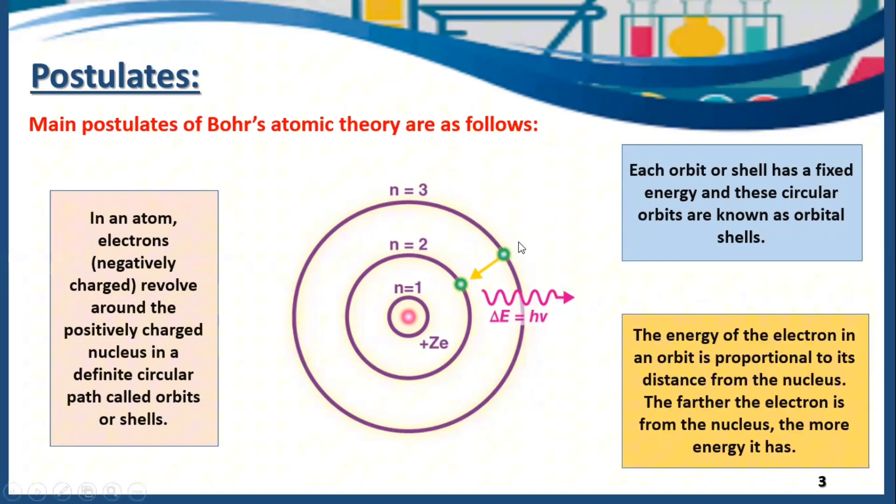The energy of the electron in an orbit is proportional to its distance from the nucleus. The farther the electron is from the nucleus, more energy it has. For example, this electron is present in shell 3, so it is more far from the nucleus as compared to this electron which is present in shell 2. This electron has more energy as compared to this one because the distance of this electron is more from the nucleus.